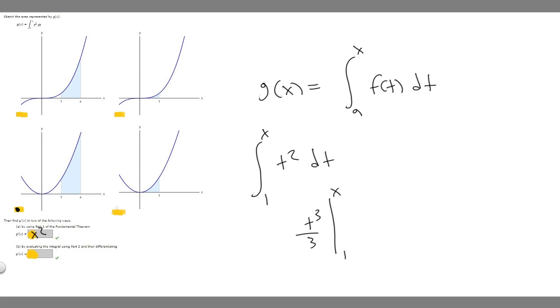So if we do that, we'll start with x, and then we're going to subtract whatever it is at 1. So if we plug in x, it's going to become x cubed over 3. So 1 over 3 x cubed minus, and then if we plug in 1, it's going to become 1 cubed, which is 1 over 3.